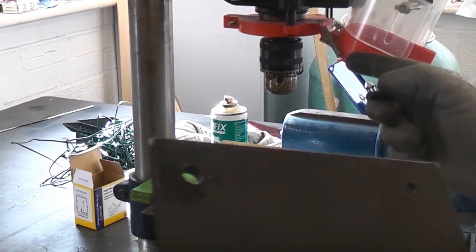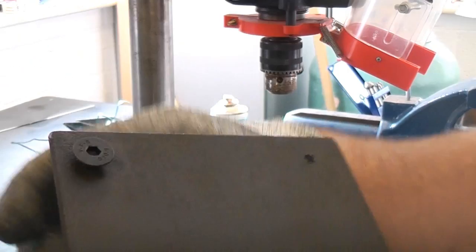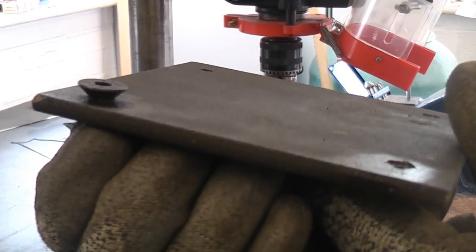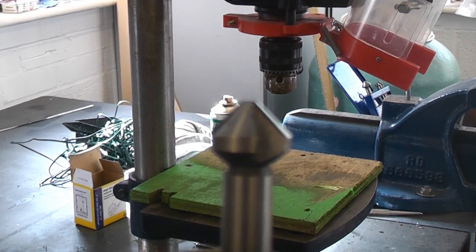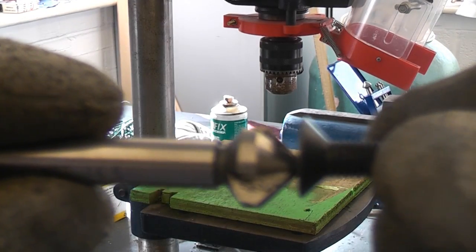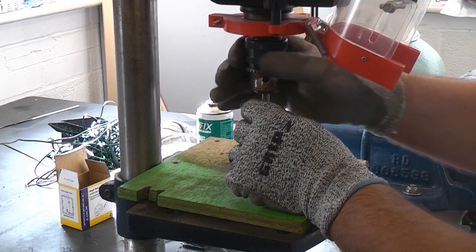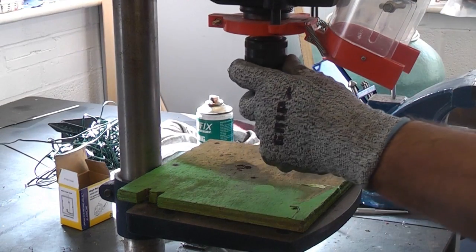We are now going to set up the pillar drill so that we can countersink this metal so that the countersunk bolts will fit in there nice and flush. To start off we need to get a countersinking bit that is approximately the same size as the head on the countersunk bolt. We then need to fit the countersinking bit into the chuck of the drill.